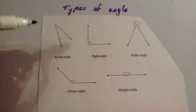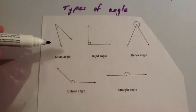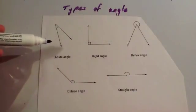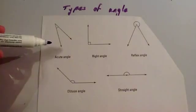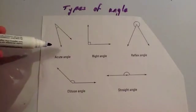We're now going to look at types of angles. An angle that's bigger than 0 degrees but less than 90 degrees is called an acute angle.